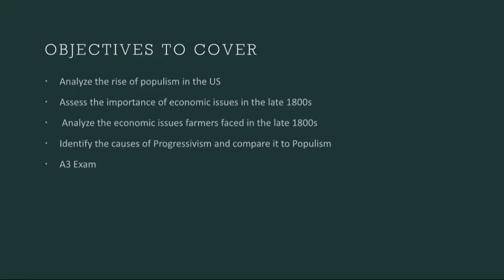We're going to start by analyzing the rise of populism in the United States. In the late 19th century, a populist movement emerged, driven by the grievances of farmers and the working class against powerful economic and political elites. Populist leaders, like William Jennings Bryan, advocated for the free coinage of silver, creating a bimetallic currency system that would ease the burden on debt-ridden farmers. The Populist Party, formed in the 1890s, sought to address economic inequality, advocating for reforms such as direct election of senators and an income tax. The movement's influence extended beyond its political victories, leaving an enduring impact on American political discourse.